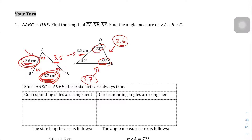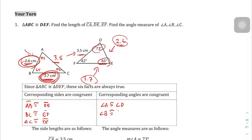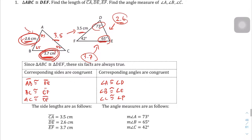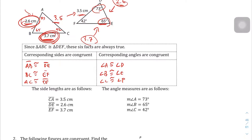Now let's label all the corresponding sides. Side AB is congruent to side DE. Side BC is congruent to side EF. Side AC is congruent to side DF. For the corresponding angles: angle A is congruent to angle D. Angle B is congruent to angle E. And angle C is congruent to angle F. That's question 1 done — let's jump to question 2.